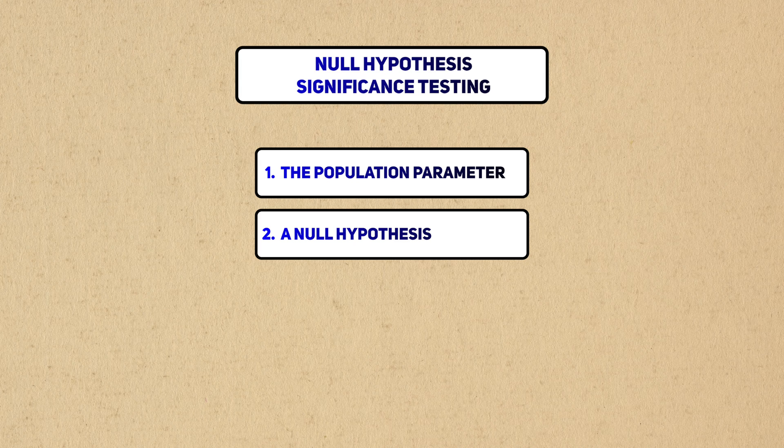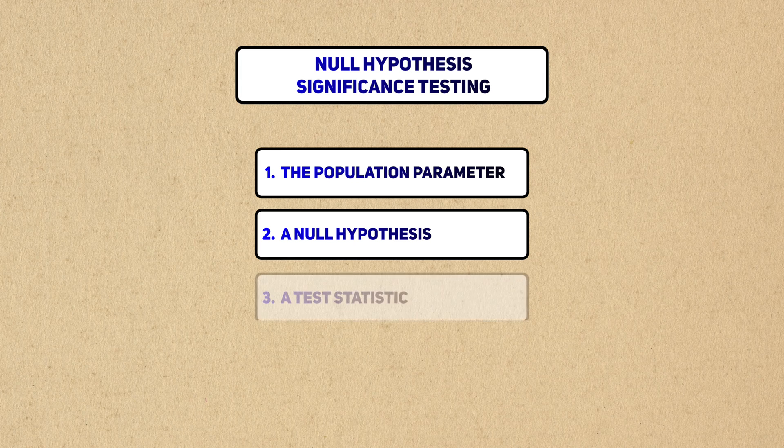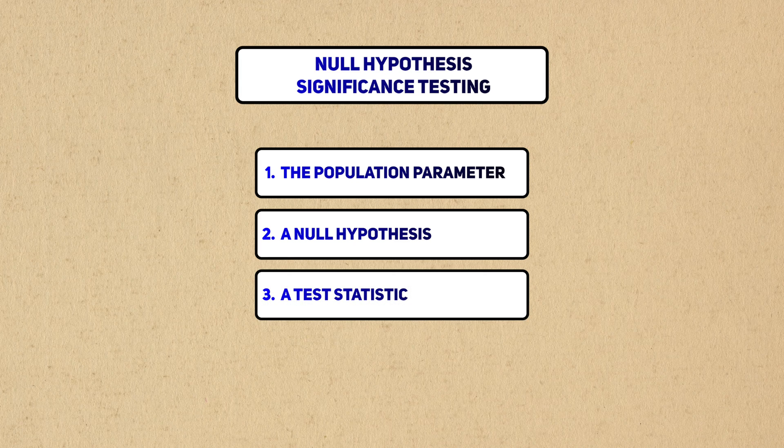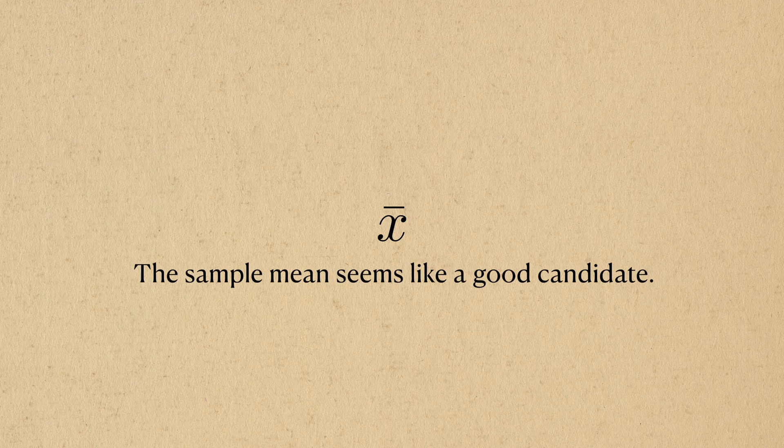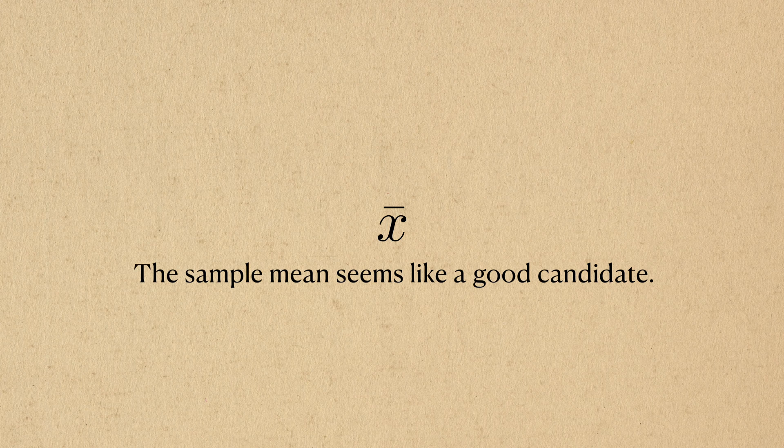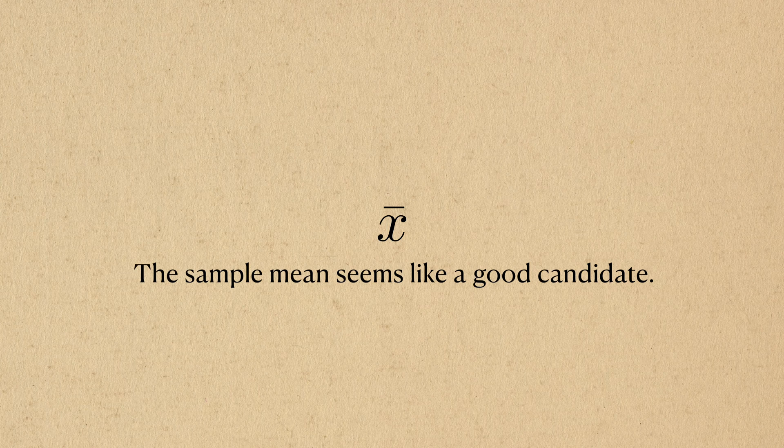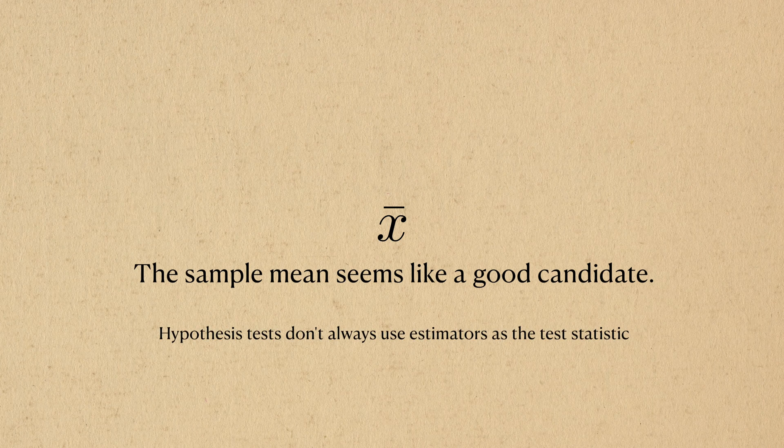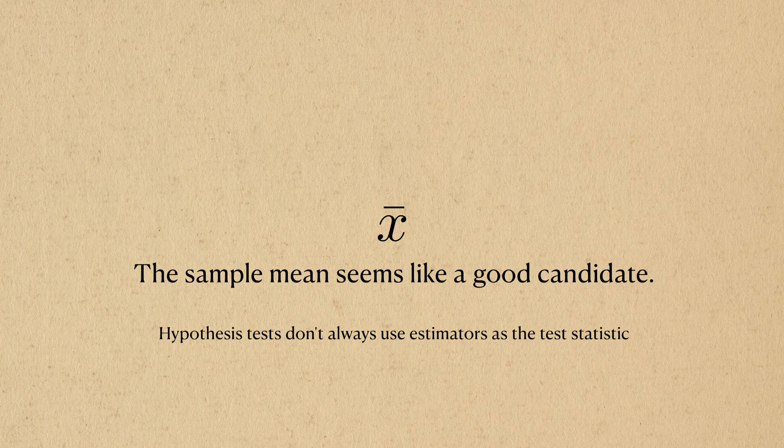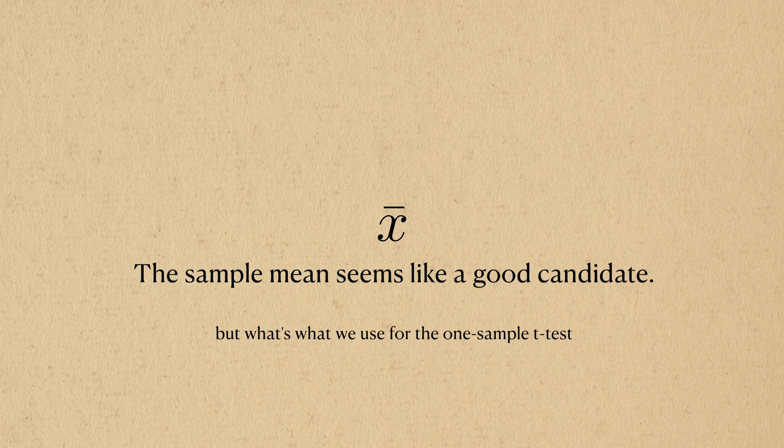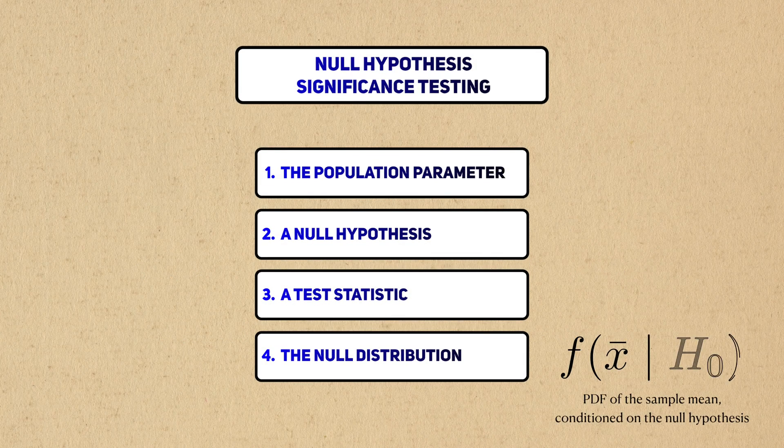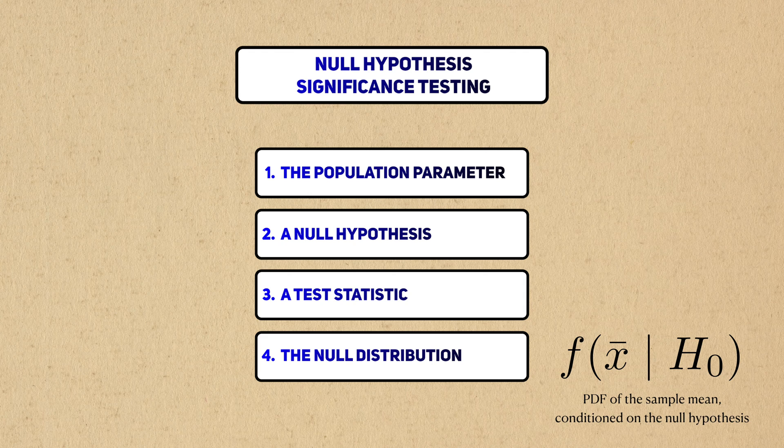Since we have the population parameter and the null hypothesis, we need to figure out a good test statistic and its null distribution. We've already mentioned that the sample mean, x̄ (x bar), is a good guess for the population mean, so why don't we go with that? Hypothesis tests don't always use estimators as the test statistic, but this is what the one-sample t-test uses.